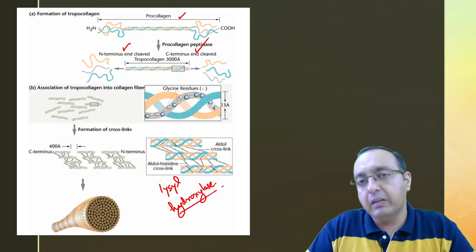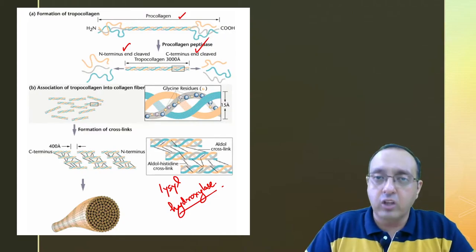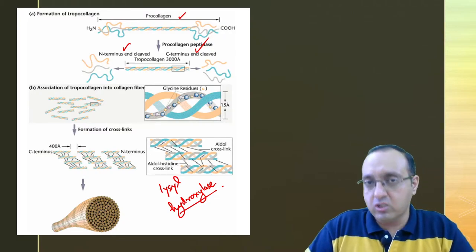For example, during aging, as the age of an organism progresses, the collagen gets more and more cross-linked.